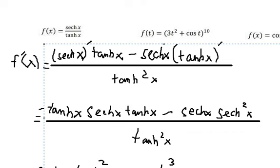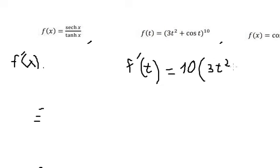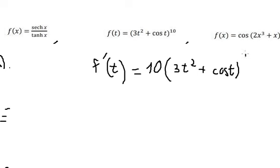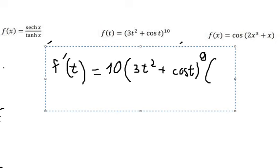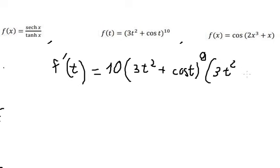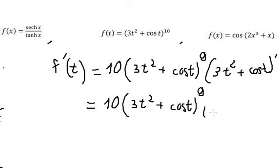Now let's go to the next one. You put in the exponent 10 here: we have (3t squared plus cos t) to the power of 10. Taking 10 minus 1 gives the power of 9. We multiply by the first derivative of (3t squared plus cos t), which gives us 6t minus sin t.